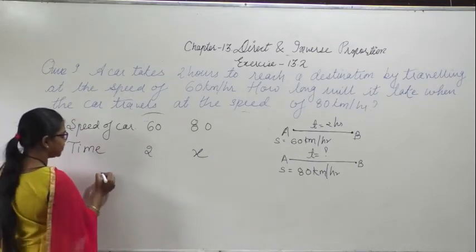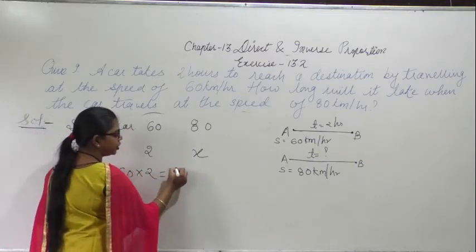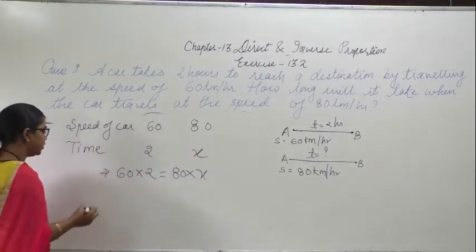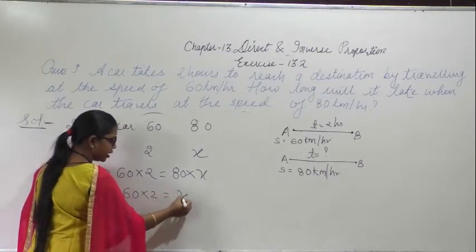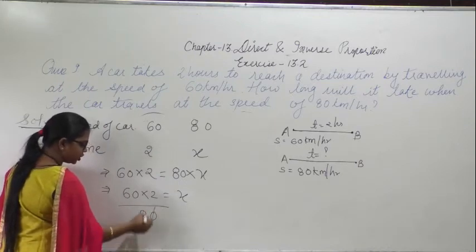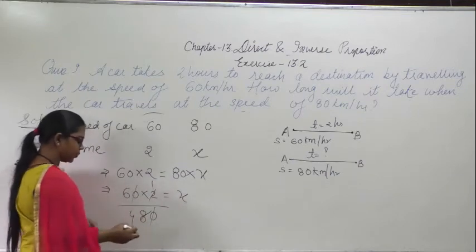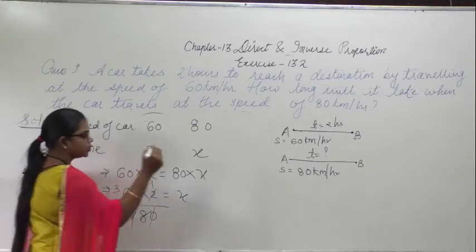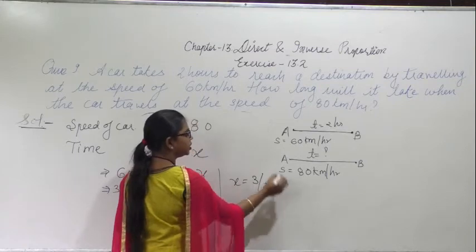So this will be 60 into 2 equal to 80 into x. This 2 and this 2 will get multiplied from here; you will get 60 into 2, and this will come in division. This zero and this zero get cancelled. From here you will get x equal to 3 by 2.